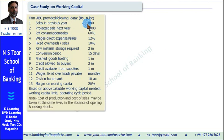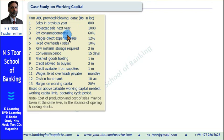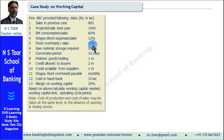Sales in the previous year: 800 lakhs. Projected sales next year: 1000 lakhs. Raw material consumption to sales ratio: 60%. Wages and direct expenses to sales ratio: 12%. Fixed overheads to sales ratio: 10%.